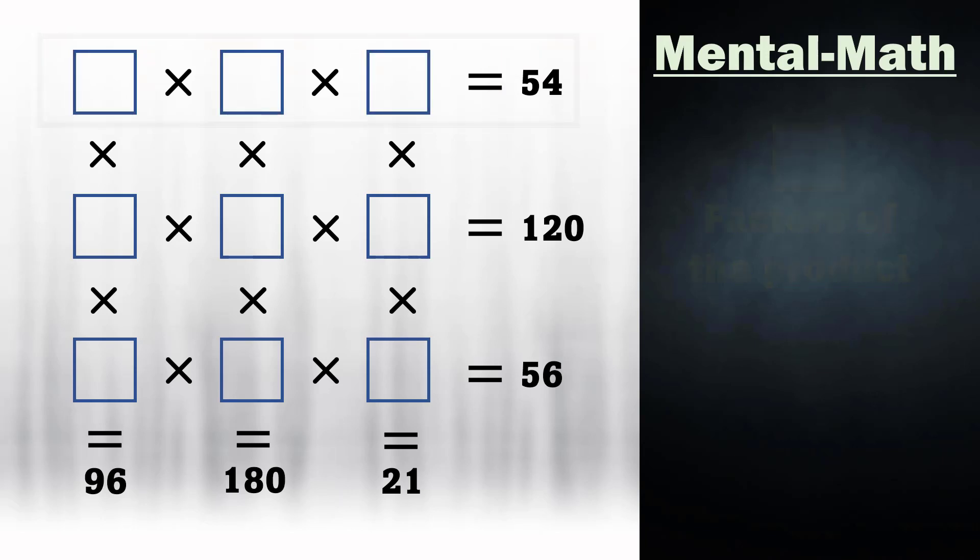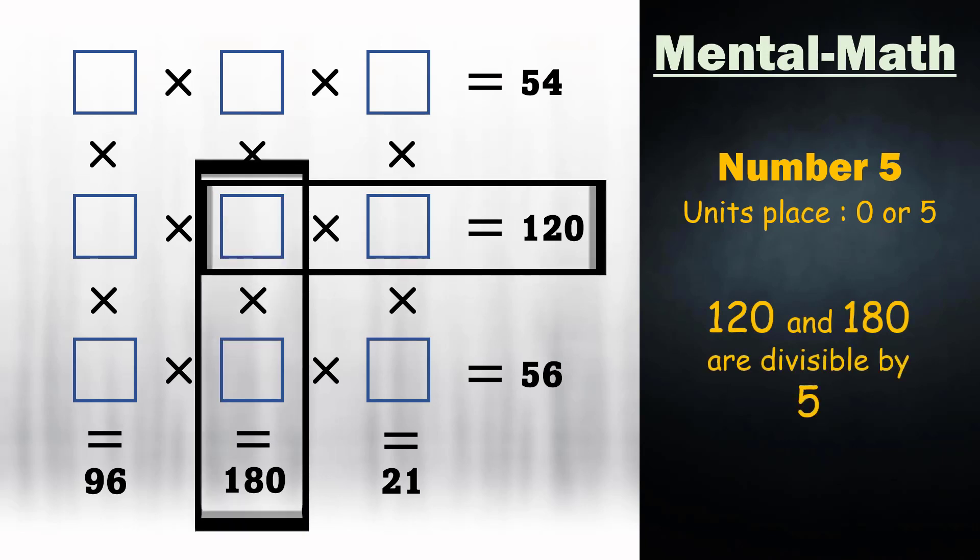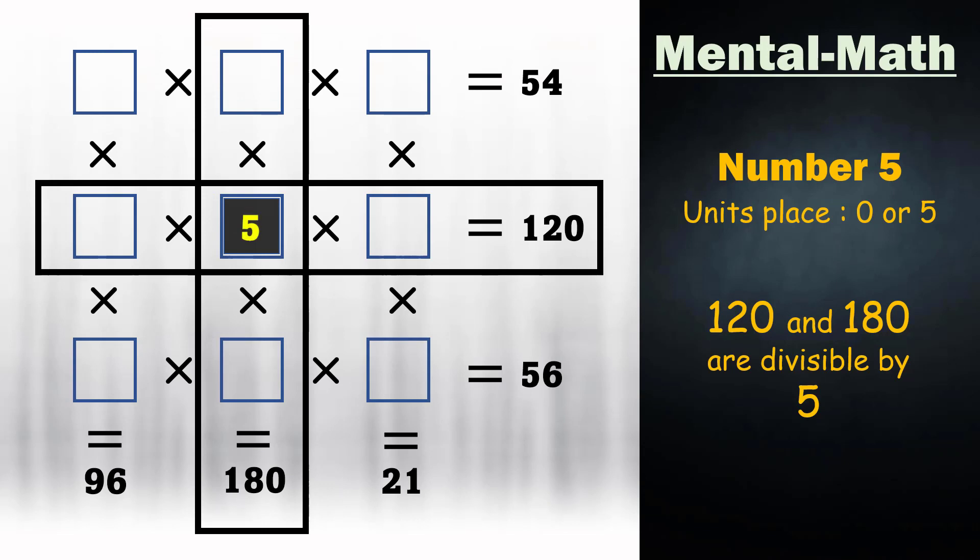The easiest number to start with is the number 5. The reason is that the multiples of 5 has either 0 or 5 in the units place. Out of these products, the numbers divisible by 5 are 120 and 180. So 5 must be present here.